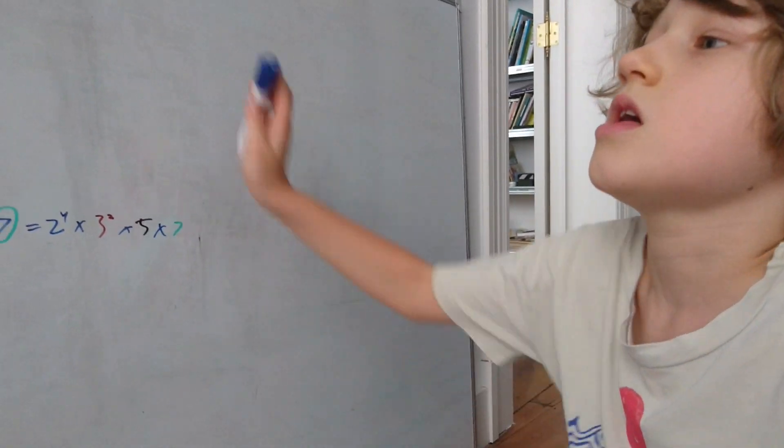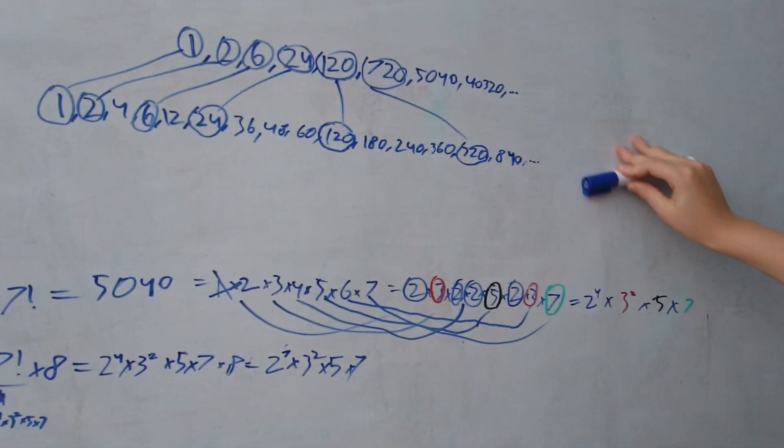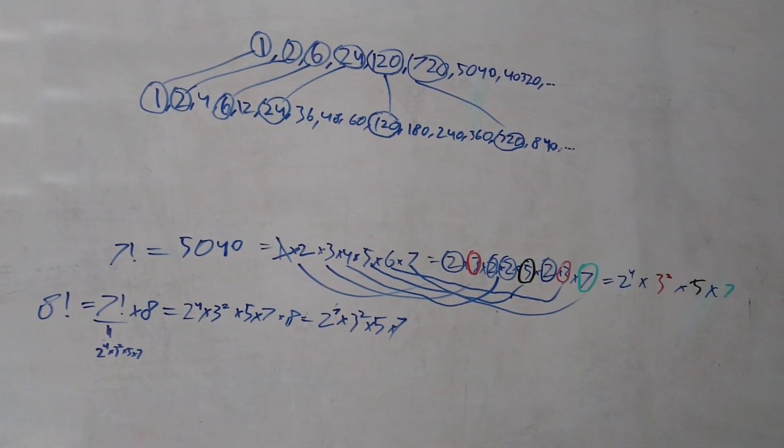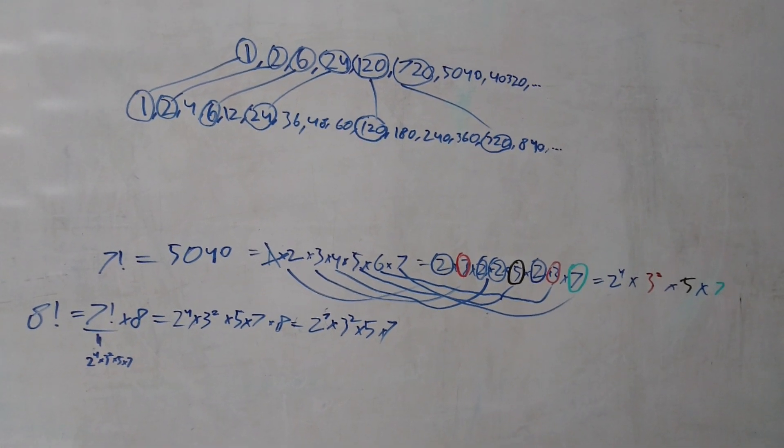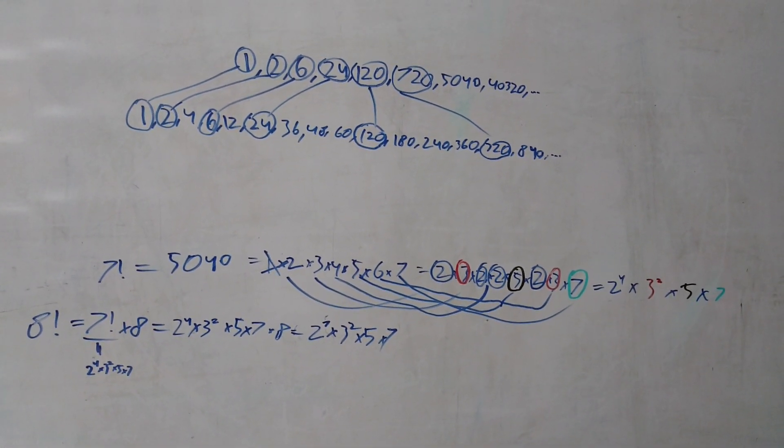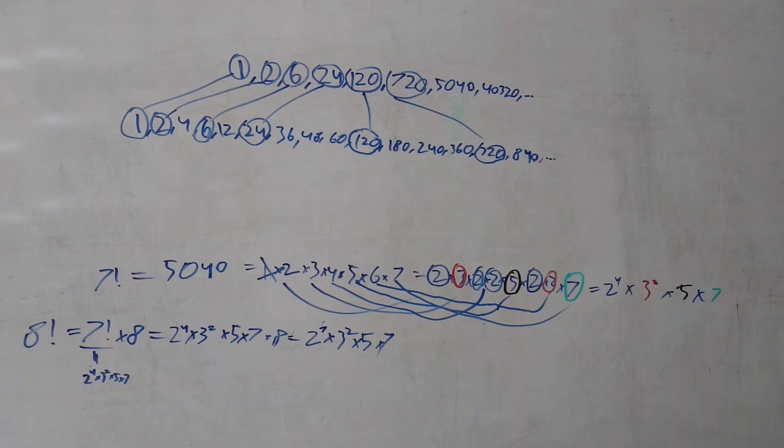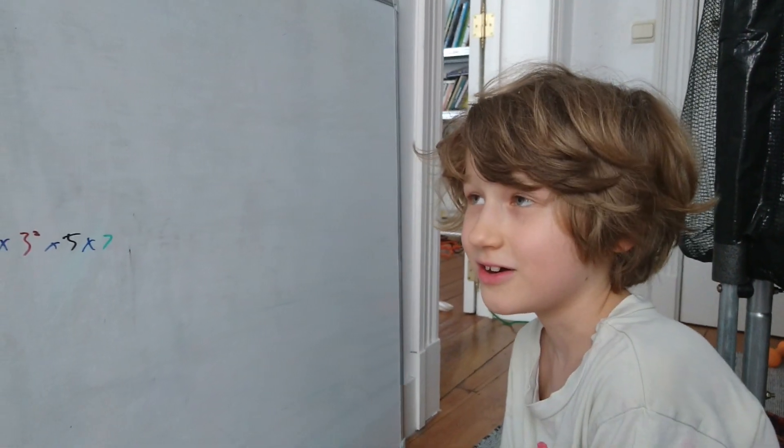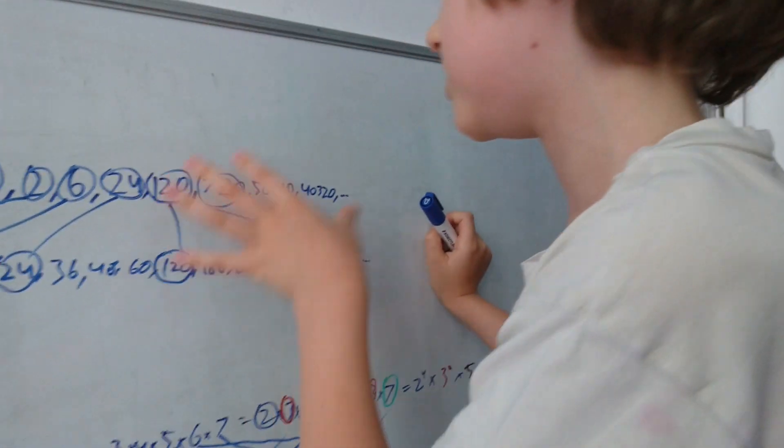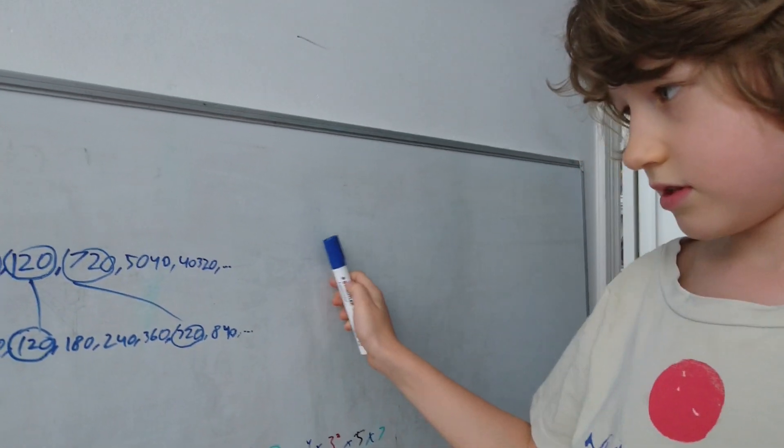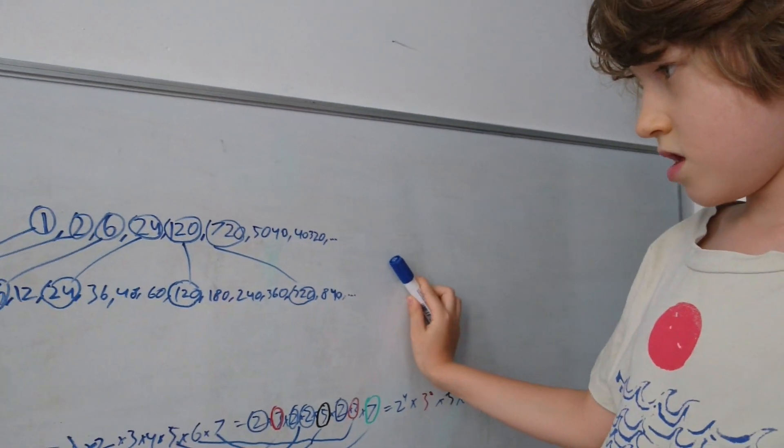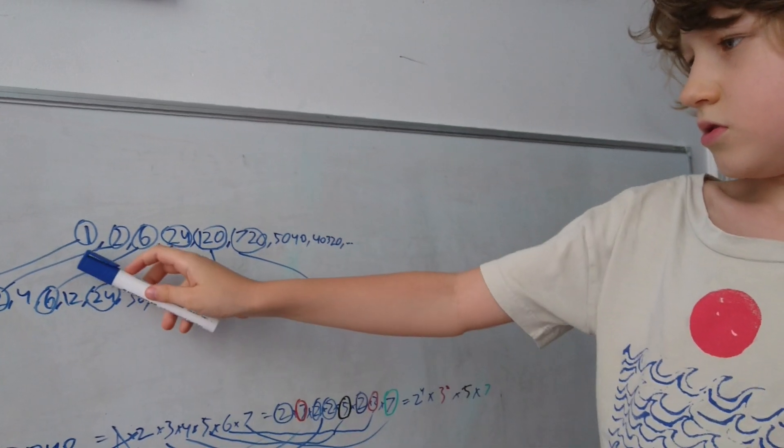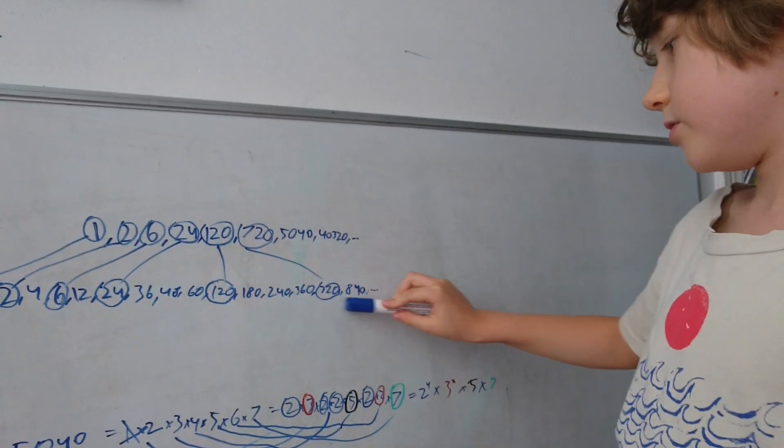But now, highly composite numbers are numbers that have more divisors than any number smaller than it. These were the first few, but then I realized, look at this, all those factorial numbers are also in here.